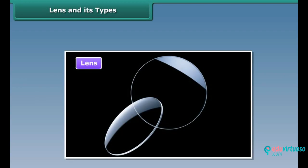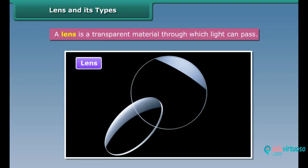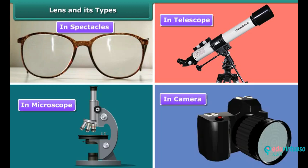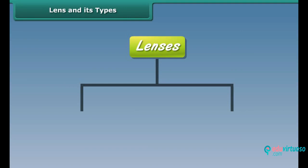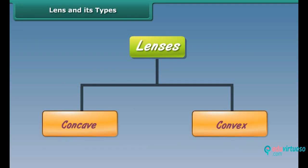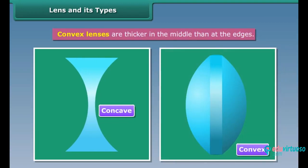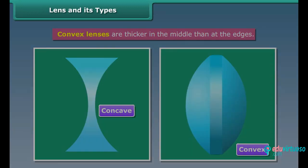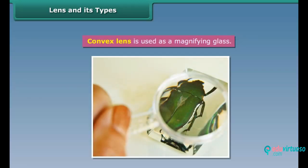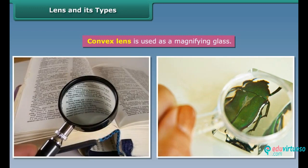Lens is a transparent material through which light can pass. Lenses are widely used in spectacles, telescopes, microscopes, and cameras. There are two types of lenses: concave and convex. Concave lenses are thinner in the middle than at the edges. We must have used a magnifying glass to observe the body parts of an insect or to read small print — it is convex in shape. Hence, a convex lens is used as a magnifying glass.